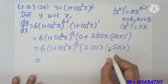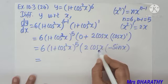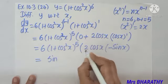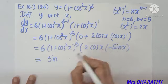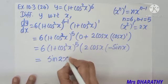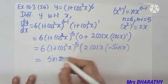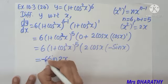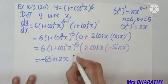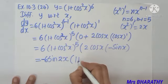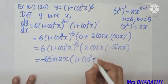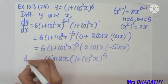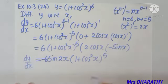We see 2·sin x·cos x, which by the trigonometry formula equals sin 2x. The minus symbol comes as it is, the 6 comes as it is, and we are left with (1 + cos²x)⁵. So the final answer for dy/dx is −6·sin 2x·(1 + cos²x)⁵.